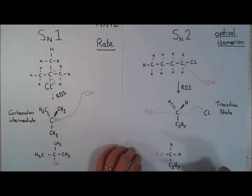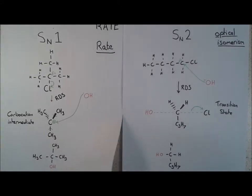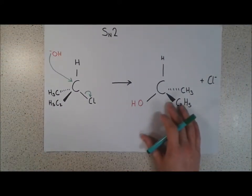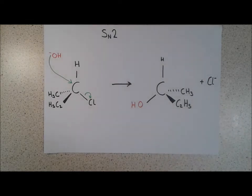With SN2, we get what we say is an inversion of optical isomerism. And to understand it, I'm going to bring in a different way of looking at it, which is the 3D version. Now, draw it in 3D because of the way the OH- attacks.